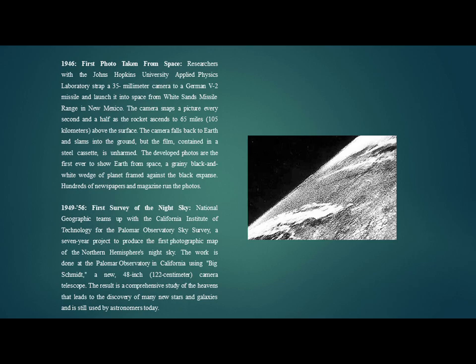From 1949 to 1956, National Geographic teamed up with the California Institute of Technology for the Palomar Observatory Sky Survey — a seven-year project to produce the first photographic map of the Northern Hemisphere's night sky. The work was done at the Palomar Observatory in California using a new 48-inch camera telescope. The result was a comprehensive study of the heavens that led to the discovery of many new stars and galaxies and is still used by astronomers today.